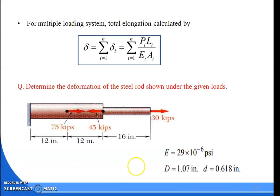Now, for a multiple loading system — when a body is subjected to more than one load — the total elongation equals the summation from i equal to 1 to n of delta_i. That means we calculate the elongation for each individual section separately and then add all those individual values to get the total elongation of the whole body.